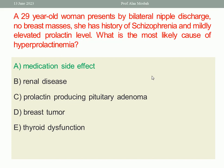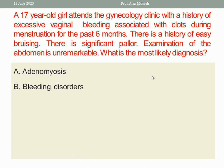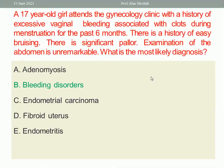Next: a 17-year-old girl attends the gynecology clinic with a history of excessive vaginal bleeding associated with clots during menstruation for the past six months. There is a history of easy bruising. Examination of the abdomen is unremarkable. What is the most likely diagnosis? A. Adenomyosis. B. Bleeding disorder. C. Endometrial carcinoma. D. Fibroid uterus. E. Endometritis. The one best response is B, Bleeding disorder — she has pallor and bruising. In such a young age, do not think of endometrial carcinoma; think of a bleeding disorder.